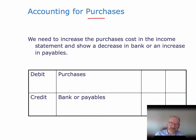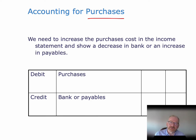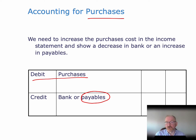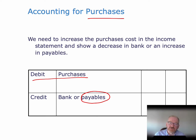Accounting for purchases on credit: for a cash purchase, we credit the bank and debit purchases. When purchasing on credit, we still debit purchases, but this time we credit the special account called payables, which appears in the liability section of the balance sheet. So instead of debiting or crediting bank, we're now debiting or crediting receivables or payables.